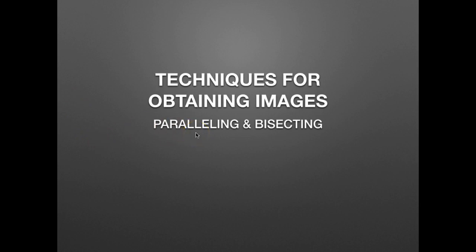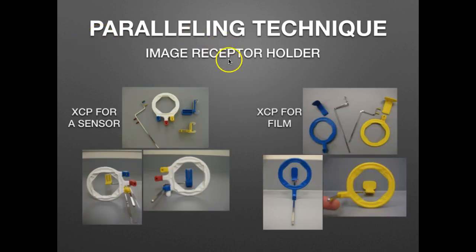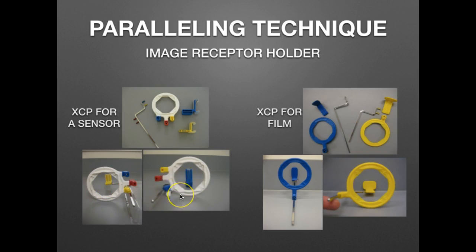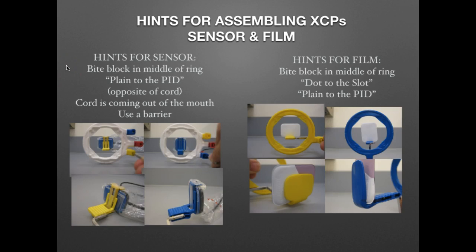The two basic techniques for obtaining images are paralleling or bisecting. For the paralleling technique, a very popular image receptor holder is the XCP, or extension cone paralleling device. These usually consist of a ring, a rod, and a bite block. They are color-coded — yellow for posterior and blue for anterior — and are available for both digital sensors and traditional film.